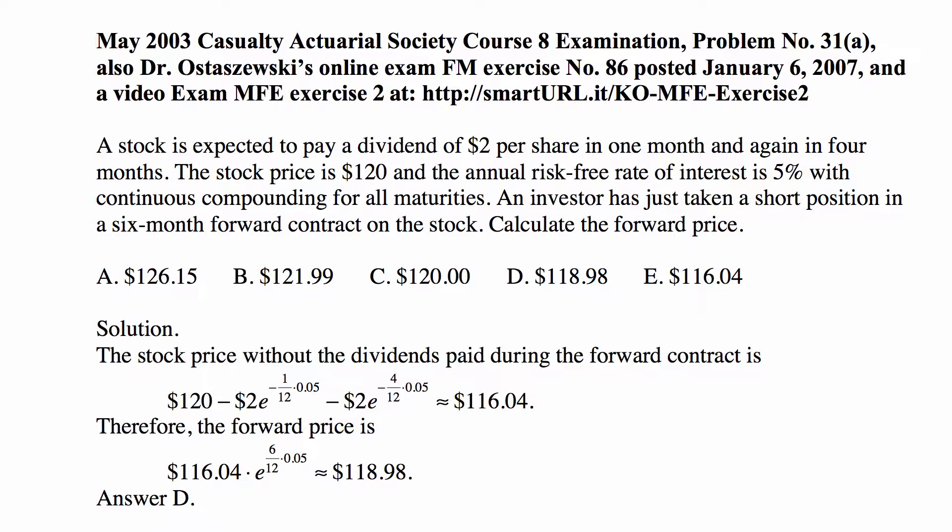The forward price is this prepaid forward price accumulated with interest until the end of the forward contract, when the contract is consummated — when you exchange money for the underlying based on the contract. So we accumulate $116.04 at 5% continuously compounded over six months (six twelfths of a year), and we get $118.98. That's answer D, and that's the end of the story.